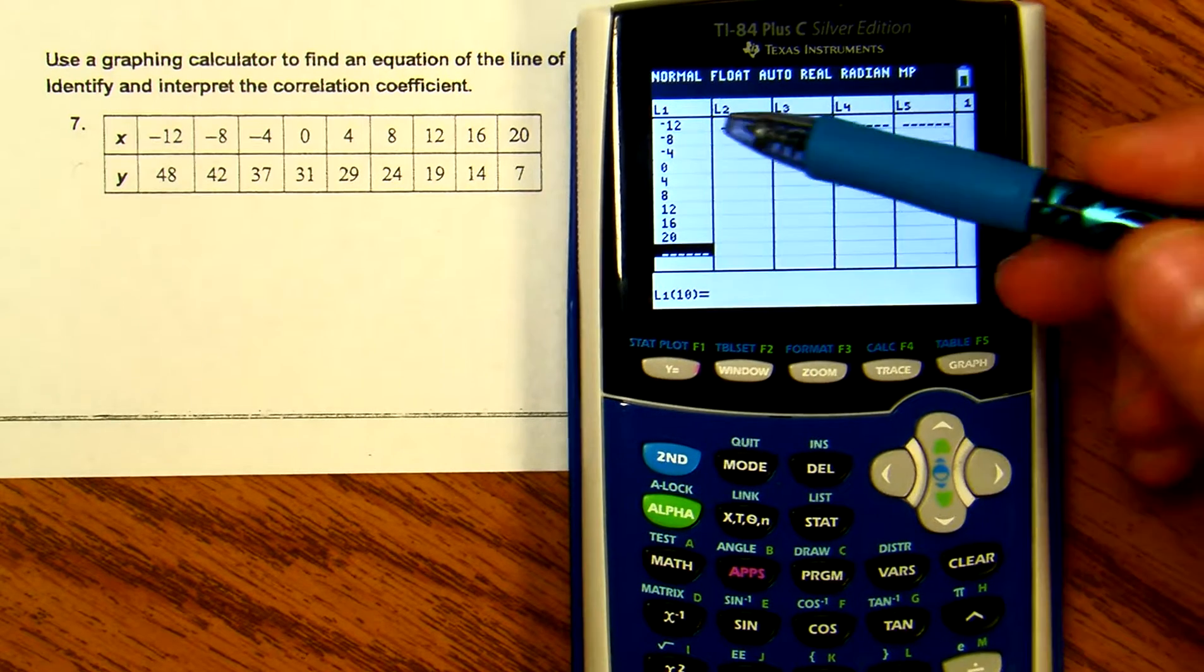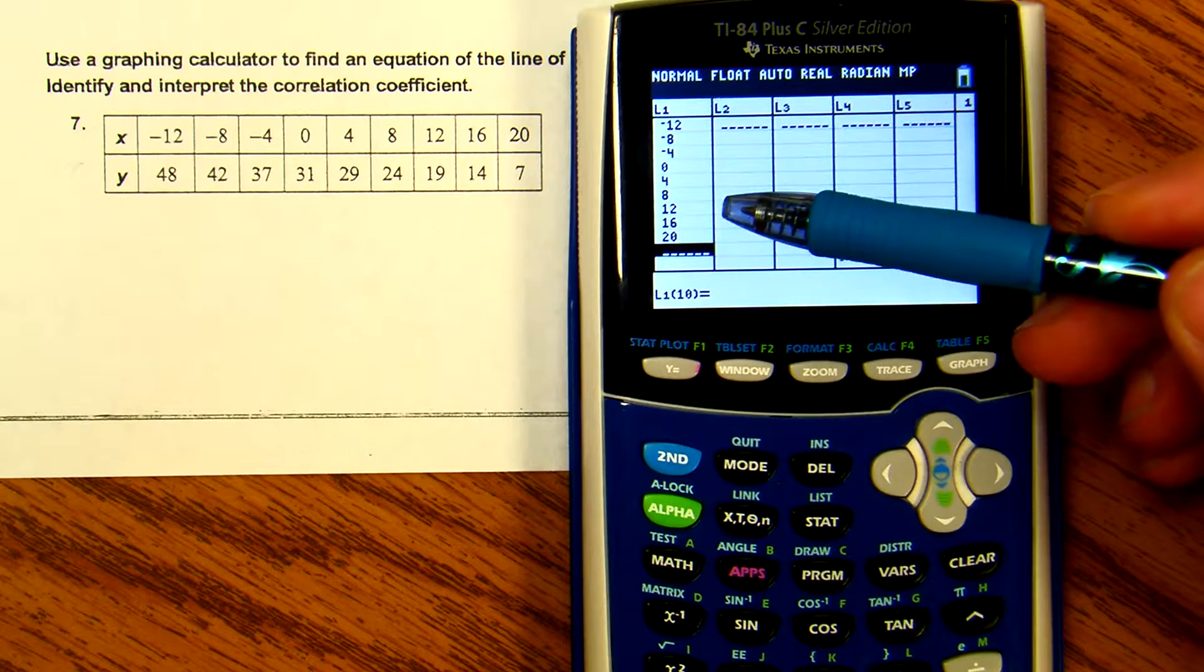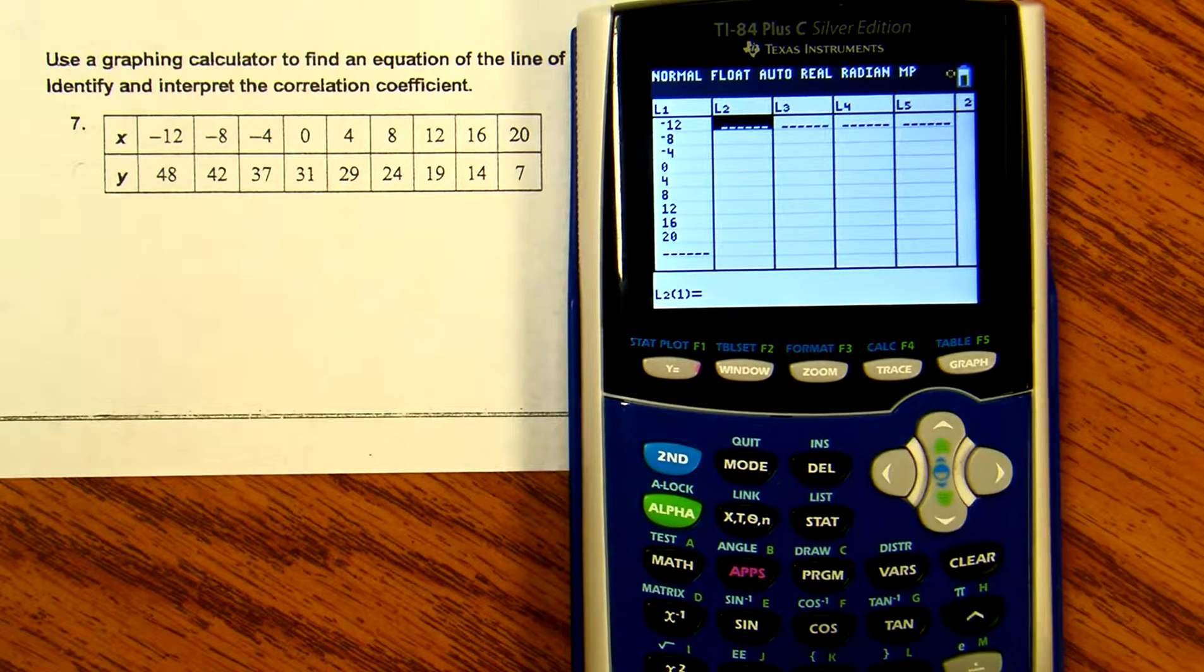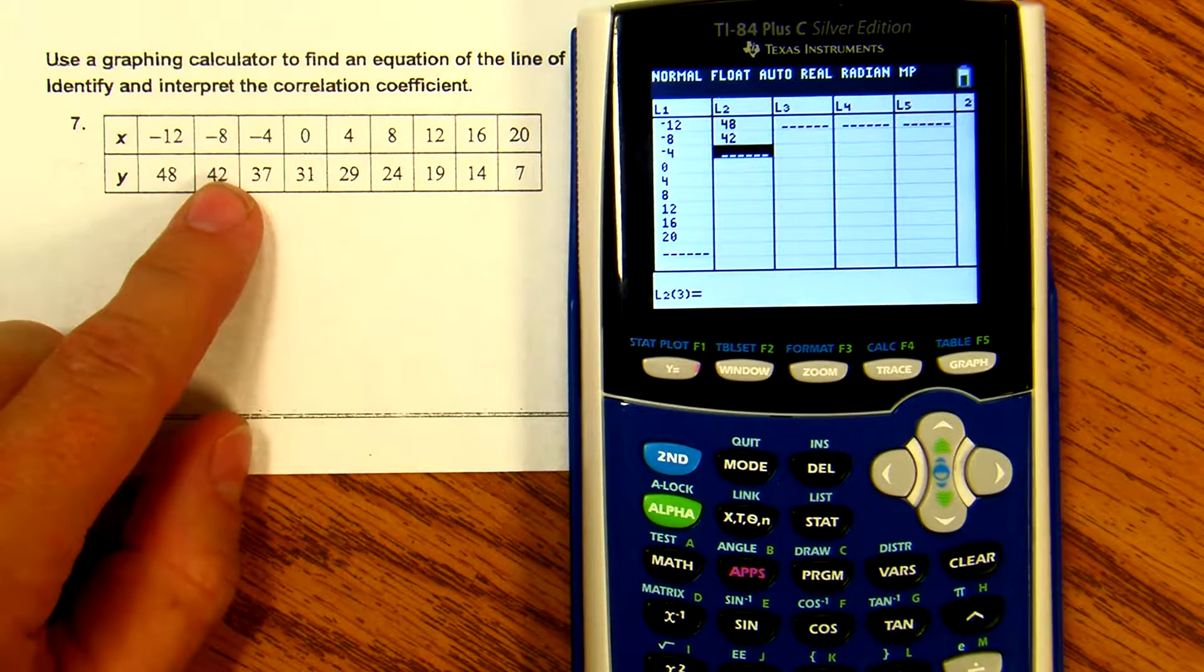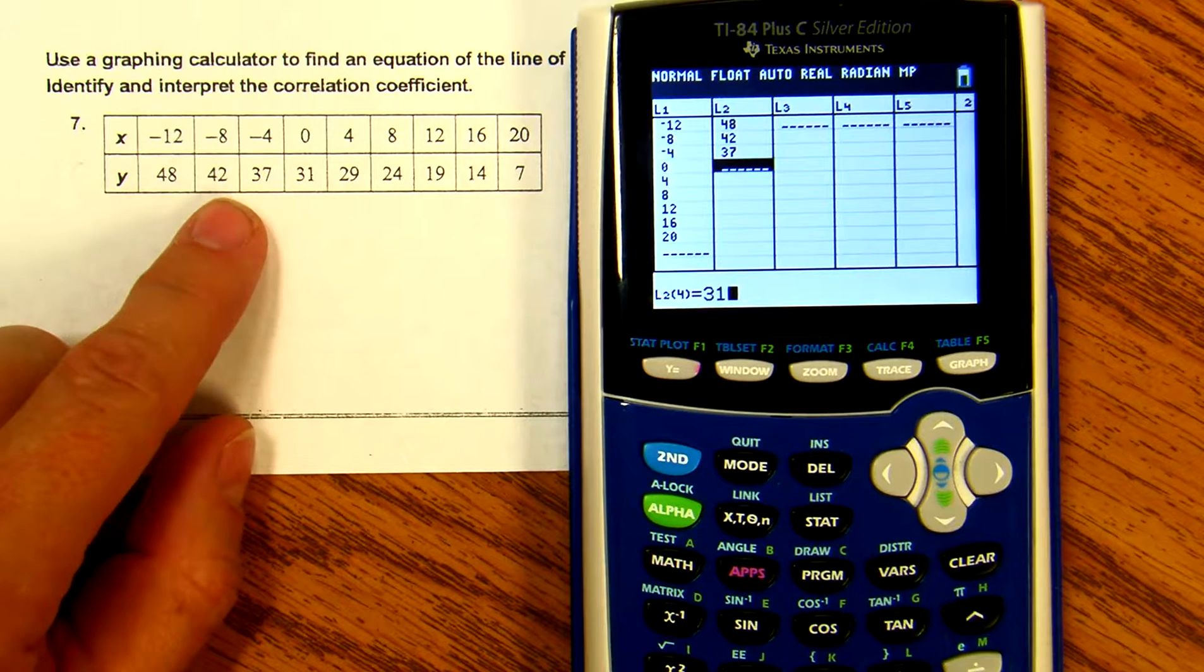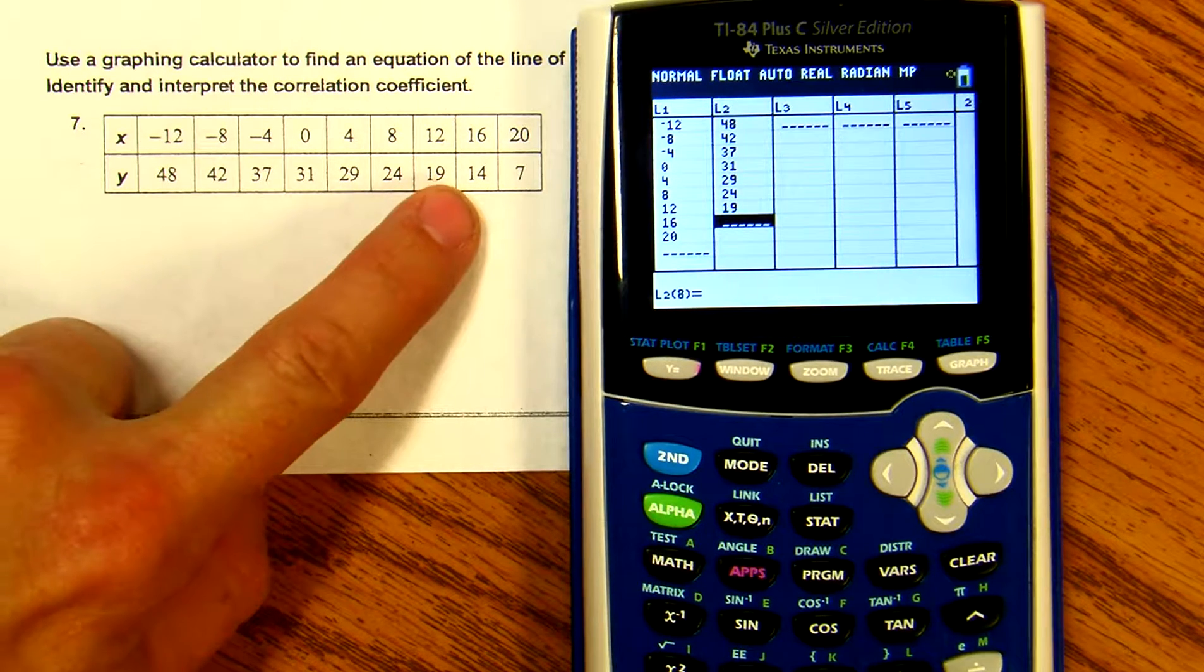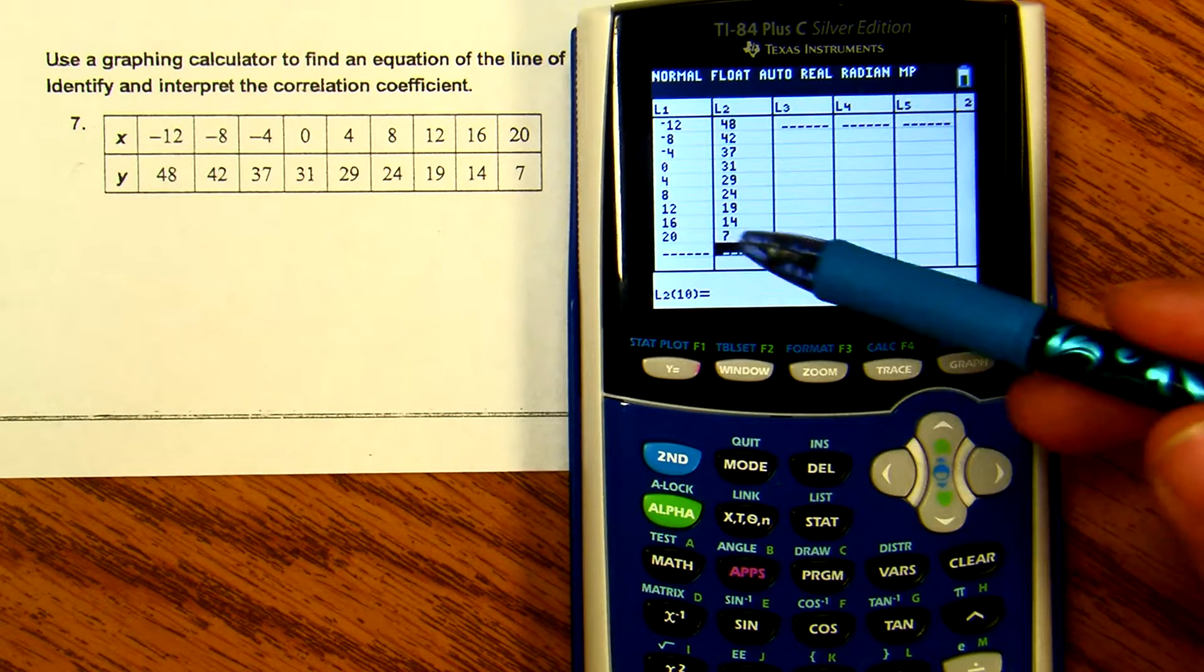All these X values are entered into List 1. Arrow over to List 2 and enter all the Y values: 48, 42, 37, 31, 29, 24, 19, 14, and 7. Confirm you have the same number of values in both lists, otherwise you could encounter an error.